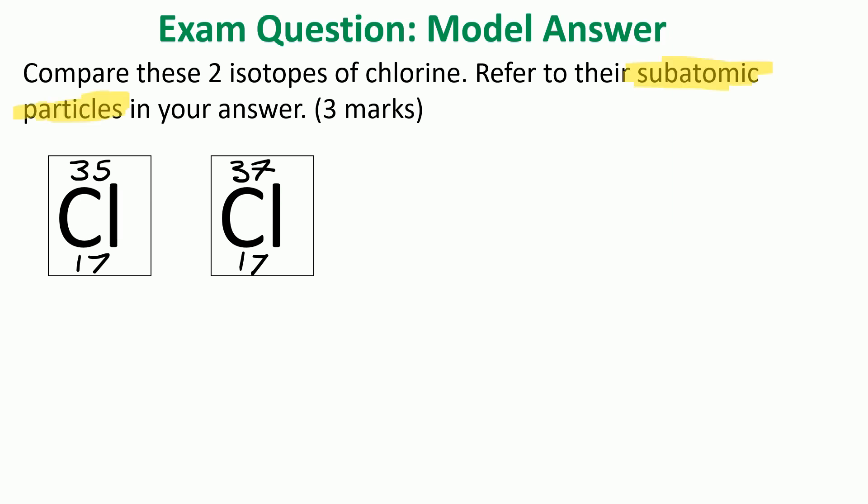Before we even get into answering the question, we're going to write those underneath each type of chlorine. So each type of chlorine has 17 protons, each has 17 electrons, and when we do the mass number minus the atomic number, we find that chlorine-35 has 18 neutrons whereas chlorine-37 has 20 neutrons. Now we've not got into answering the question yet, but by writing that information out it makes answering the question much easier. So I strongly recommend that's how you go about these questions.